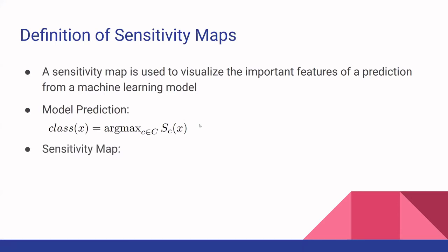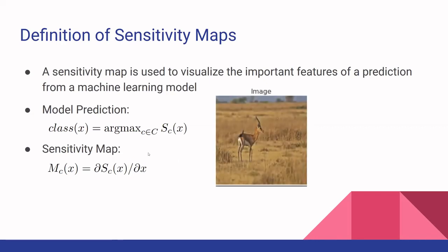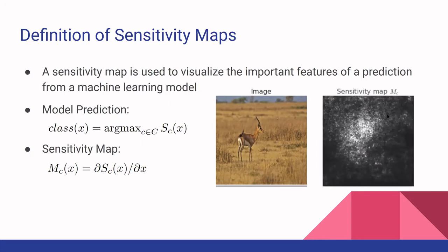The sensitivity map is what we've done previously in class, where we have the partial derivative with respect to the input, which is how we got perturbations. Here they use ImageNet, and here's an example with the gazelle. The sensitivity map output is shown, but you notice it's rather noisy using just a normal sensitivity map.